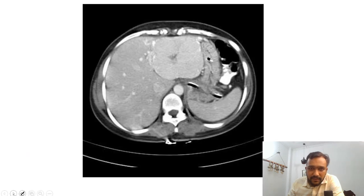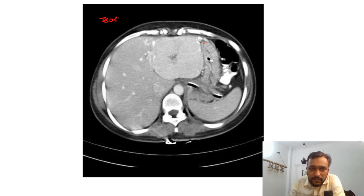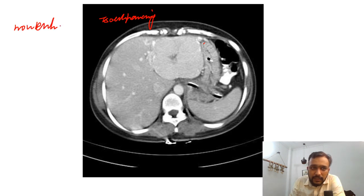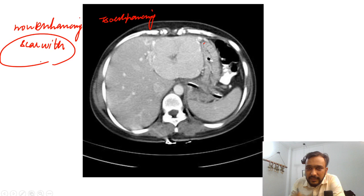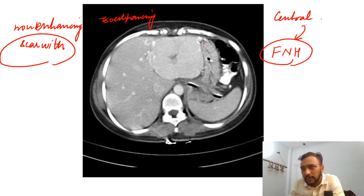Moving on to another image — in this image we can see an iso-enhancing lesion that is showing a non-enhancing scar within it. This is basically the central scar sign being shown by this lesion. This is a case of focal nodular hyperplasia showing the central scar sign.